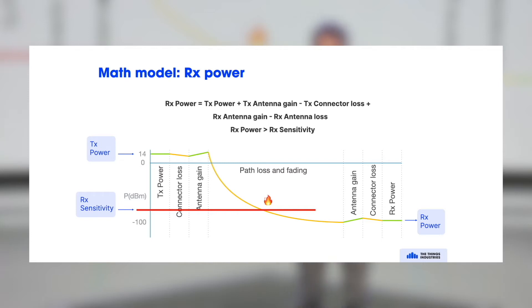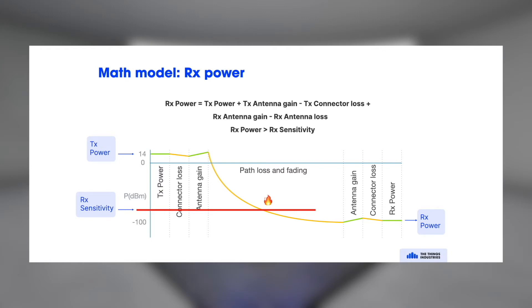So your receiver sensitivity needs to be sufficiently low, or your range should be sufficiently short to receive the message. So that's what you want basically. And you can calculate all of this.